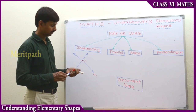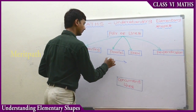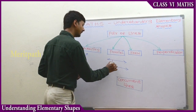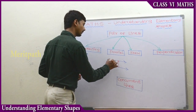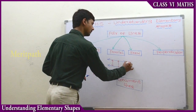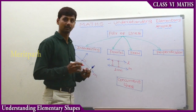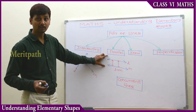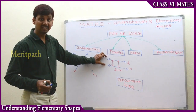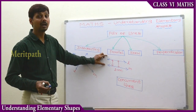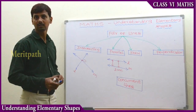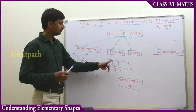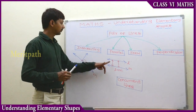Parallel lines are two lines that do not intersect, and the distance between them is always the same. We call them parallel lines, written as L is parallel to M. Observe that these two lines are not intersecting and the distance between them is always the same, so they are parallel.